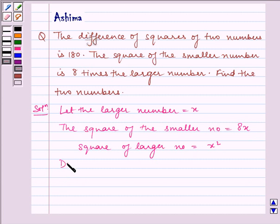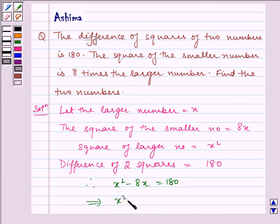Difference of two squares is equal to 180. Therefore the equation form will be x square minus 8x is equal to 180. Now solving this we get x square minus 8x minus 180 is equal to 0.